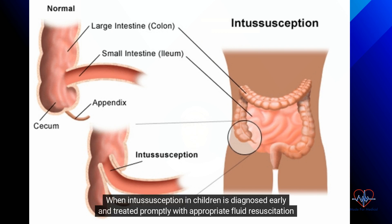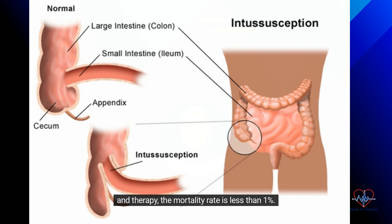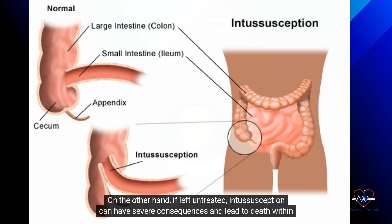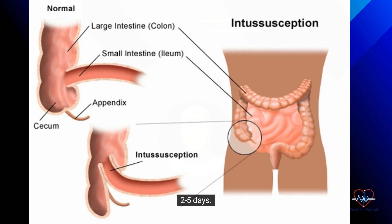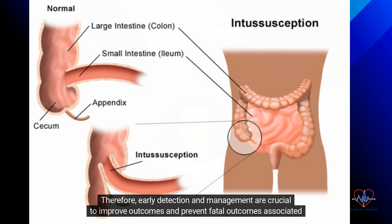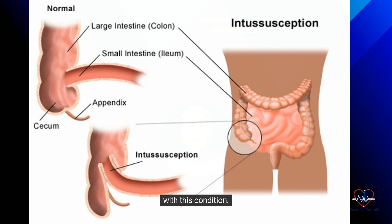When intussusception in children is diagnosed early and treated promptly with appropriate fluid resuscitation and therapy, the mortality rate is less than 1%, emphasizing the importance of timely intervention. If left untreated, intussusception can have severe consequences and lead to death within 2–5 days. Therefore, early detection and management are crucial to improve outcomes and prevent fatal outcomes associated with this condition.